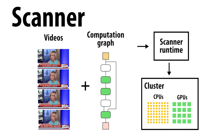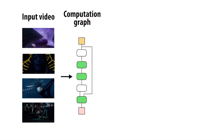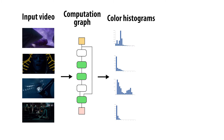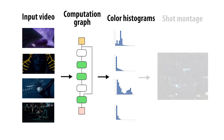For example, let's say I want to make a summary of a feature-length film, like a thumbnail for each shot. First, I define a Scanner computation graph for extracting color histograms from every frame of the video. Then, using those histograms, the application performs shot detection to produce the final montage.